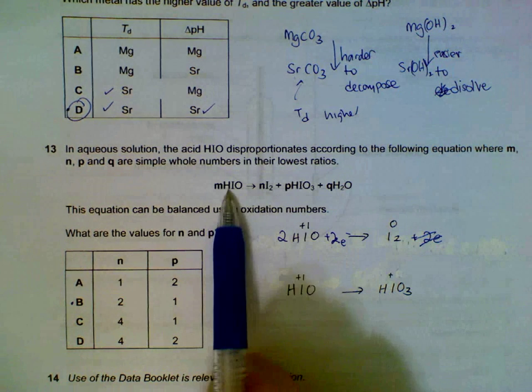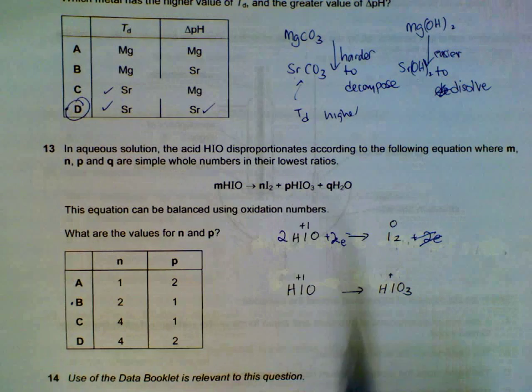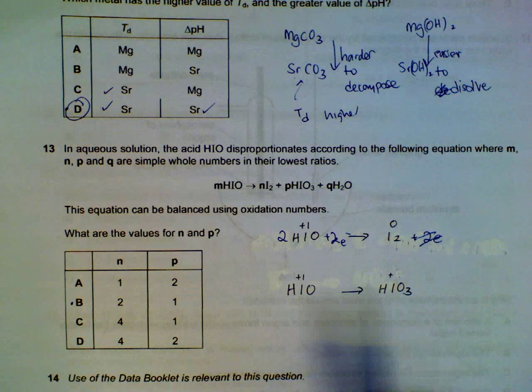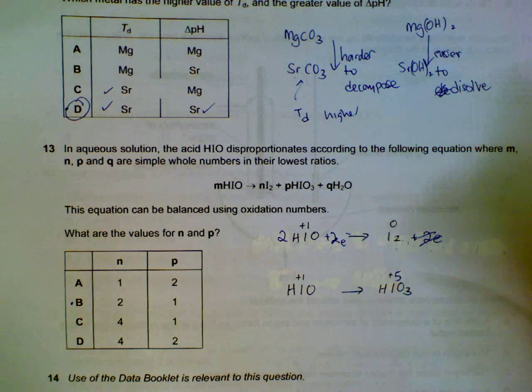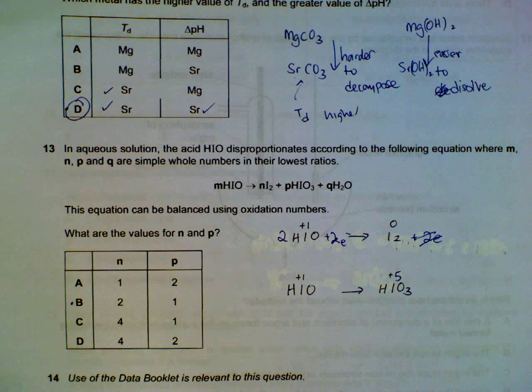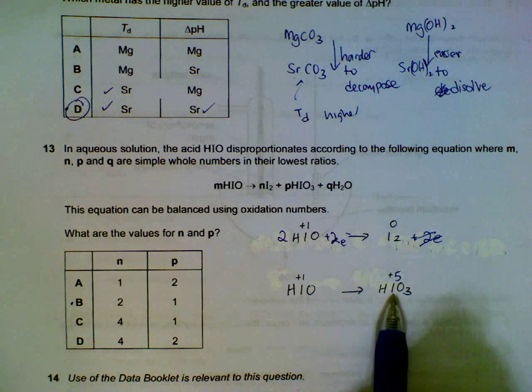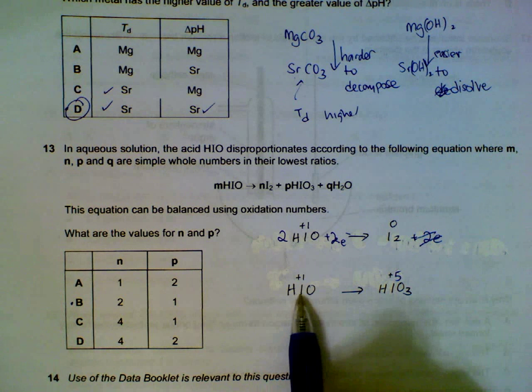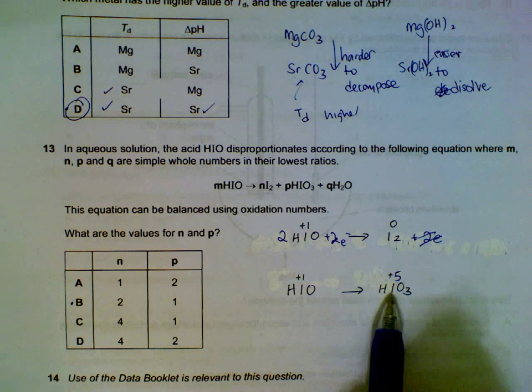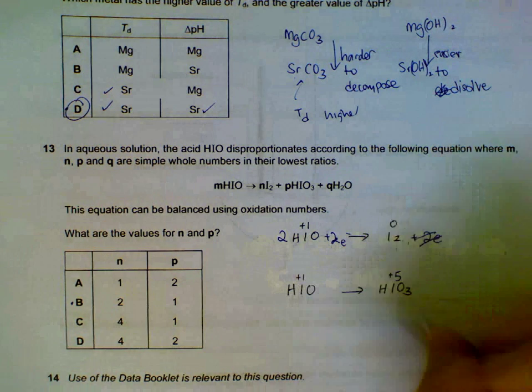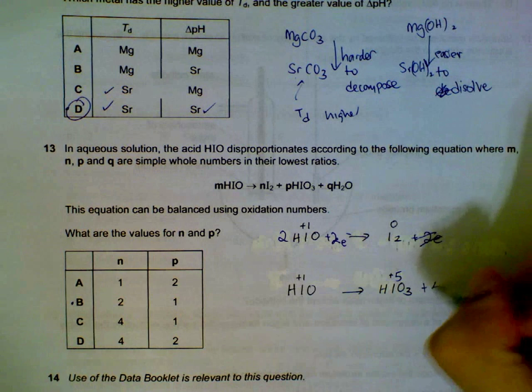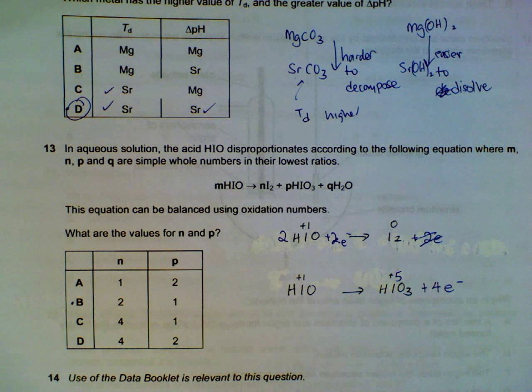Then we go to HIO becoming HIO3. This is plus 1. Then iodine in IO3 is plus 5. So the iodine is already balanced. One iodine, one iodine. In this case, this iodine will need to lose 4 electrons to go to plus 5. To increase by 4 units. So losing 4 electrons, I will put the losing 4 electrons in this manner.